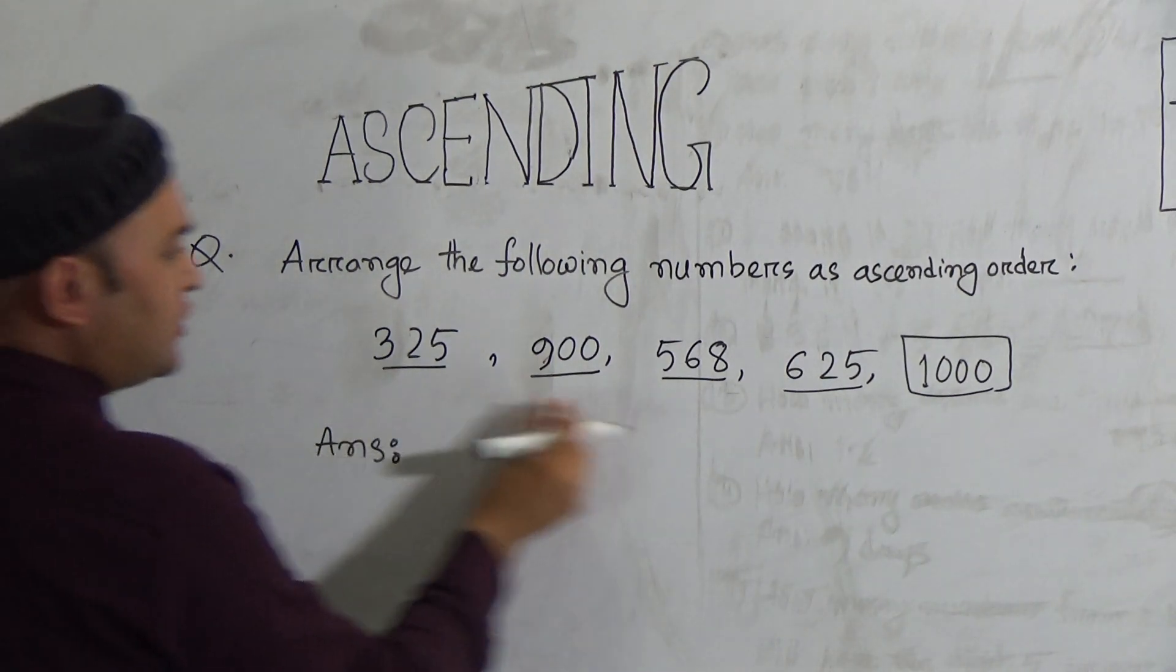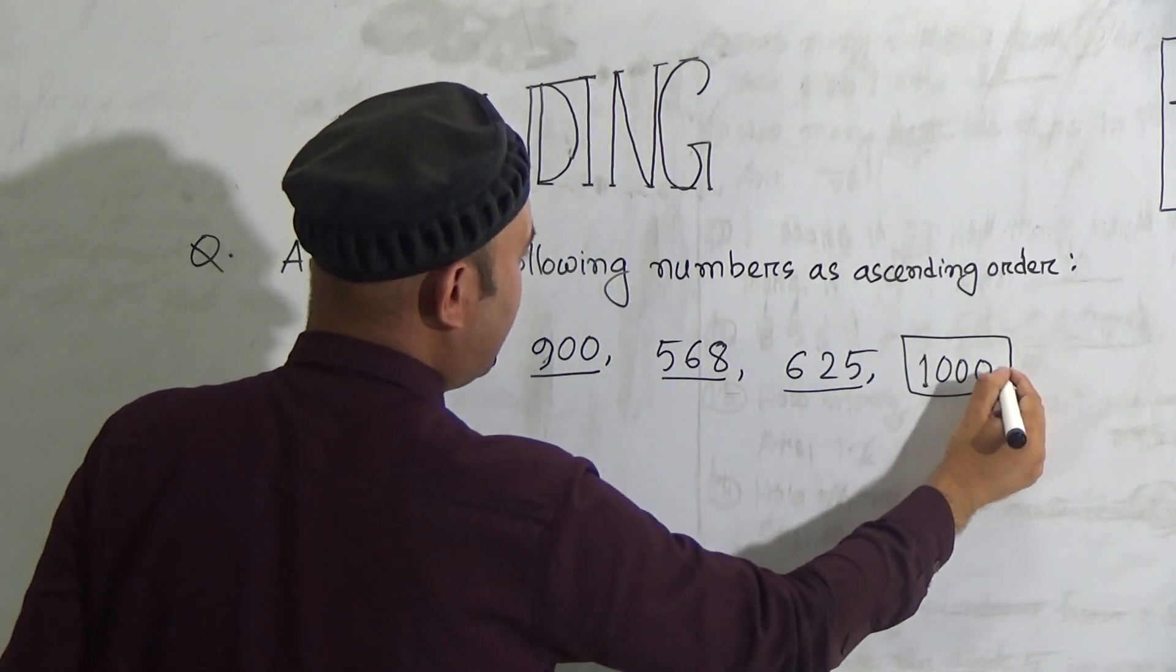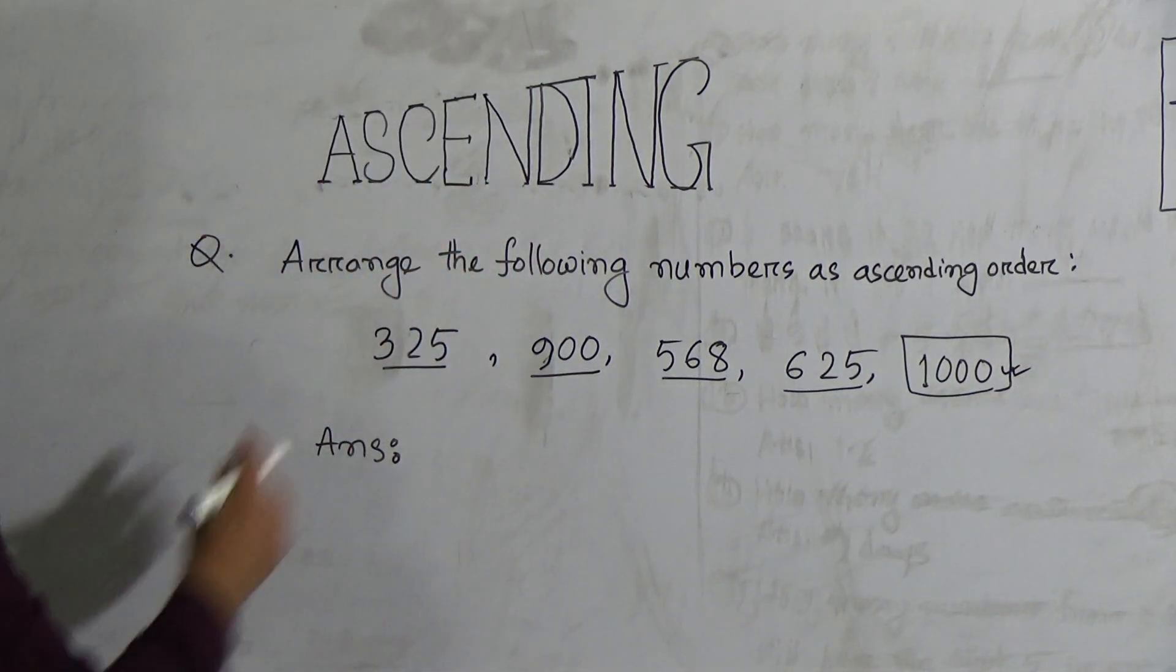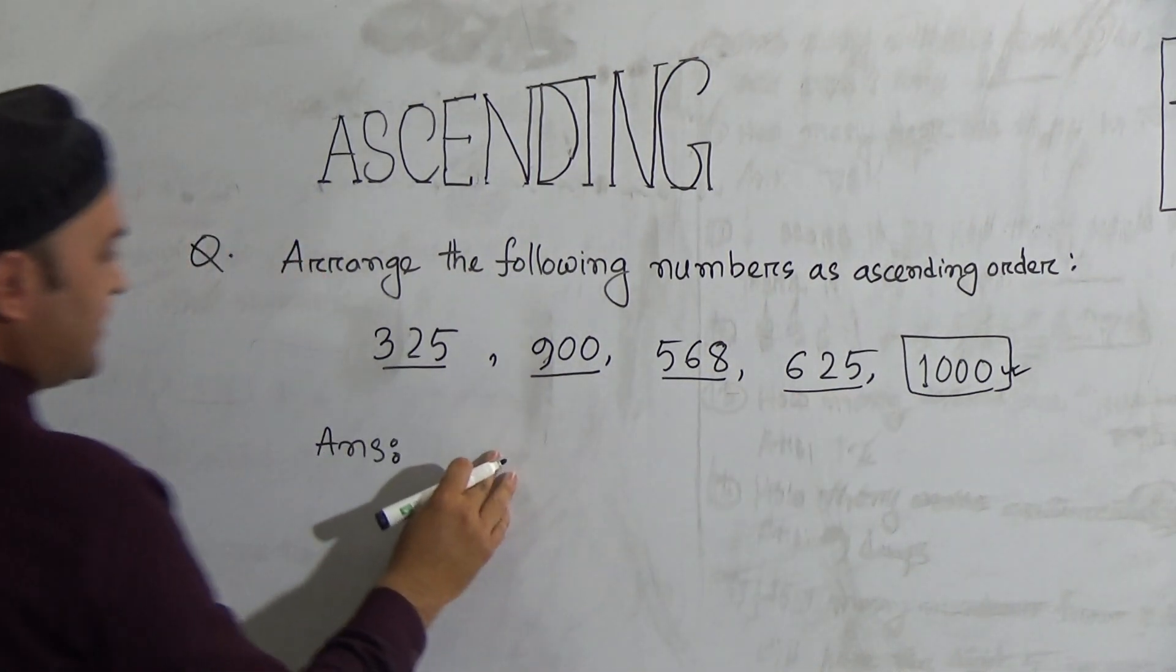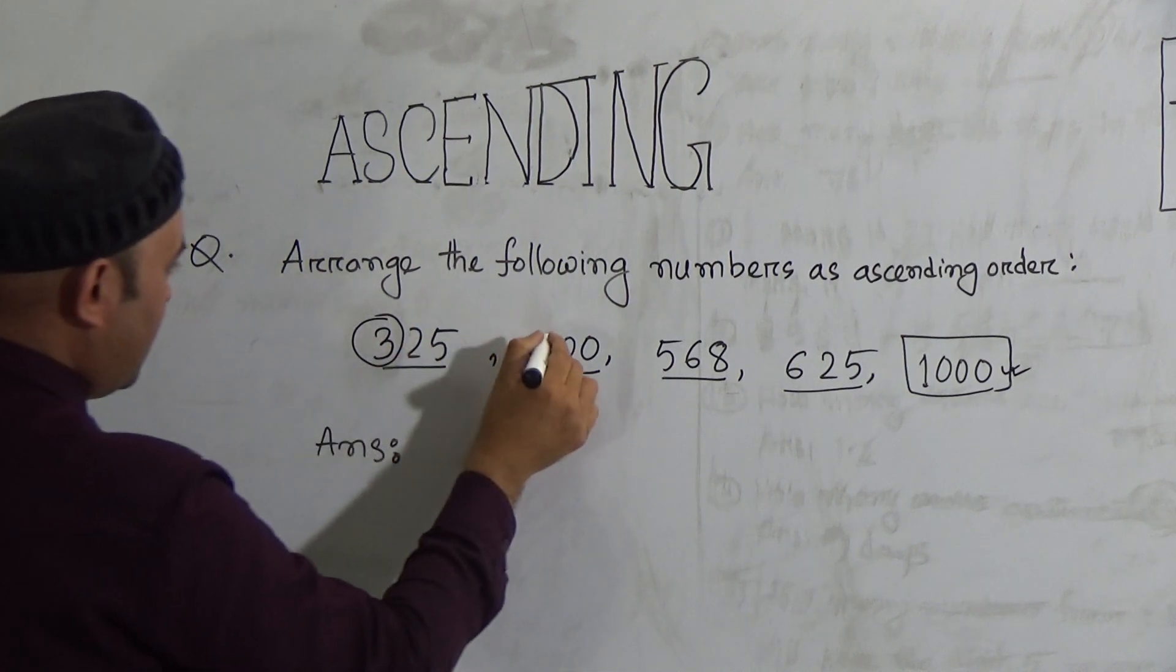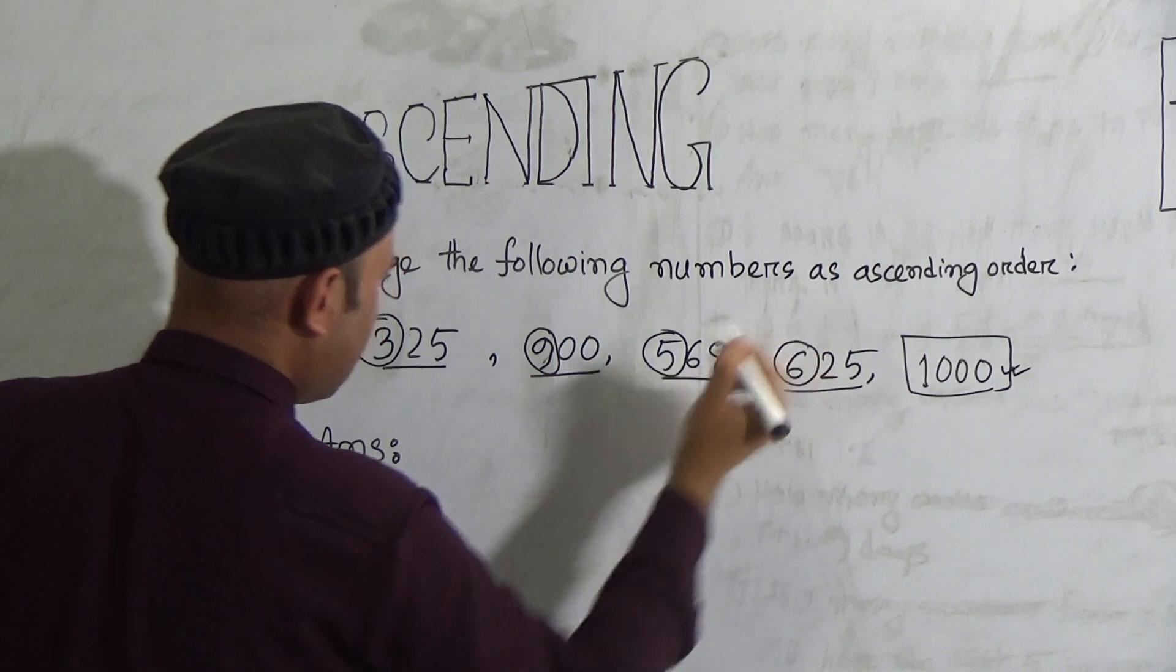So among them, 1000 is a four-digit number, so it is the biggest number. And there are four numbers with three digits. First of all, you have to look at the first digit. This is 3, this is 9, this is 5, and this is 6.